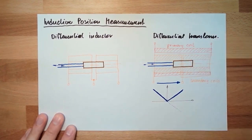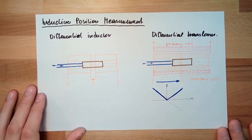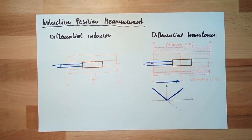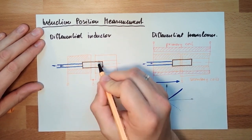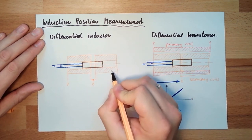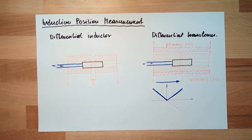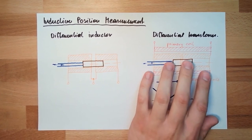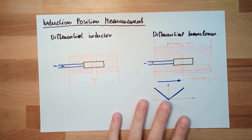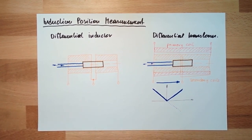The differential transformer measures voltage to determine where the ferromagnetic core is positioned. Both the differential inductor and differential transformer are inductive position measurement systems, and both are in use. The differential transformer offers a simple voltage measurement — just use a multimeter and measure. That's inductive position measurement. Next time, we are going to talk about capacitive position measurement. Thank you for listening, and goodbye!